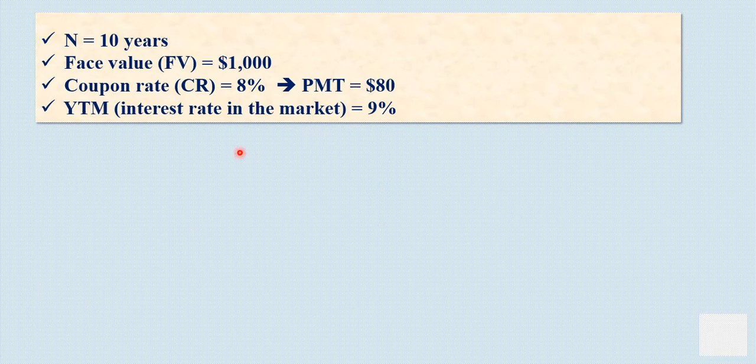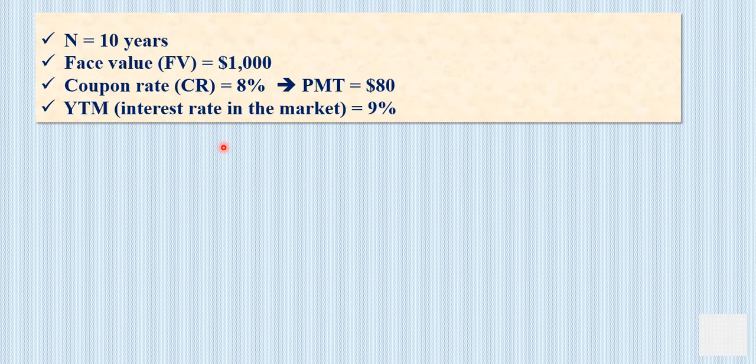To calculate the price or the fair value of any financial asset, you have to calculate the present value of the future cash flows the investor is expecting to collect from that financial asset. In the case of a bond, the bond holder is going to receive the coupon payment at the end of each year, plus the face value or par value at maturity. These are the cash flows of the bond, and we have to calculate their present values.